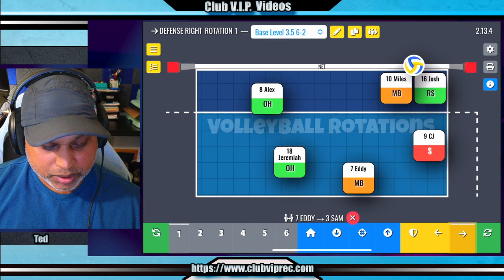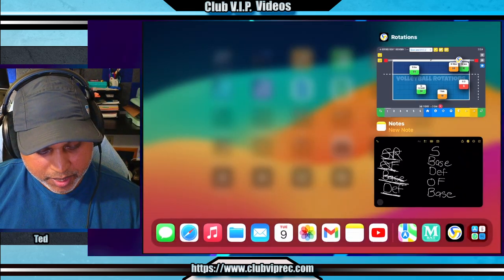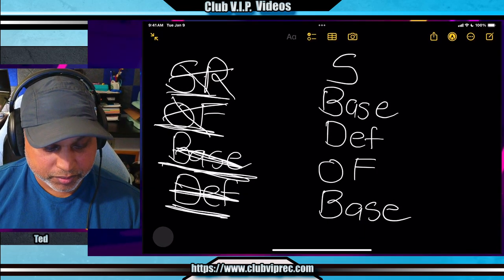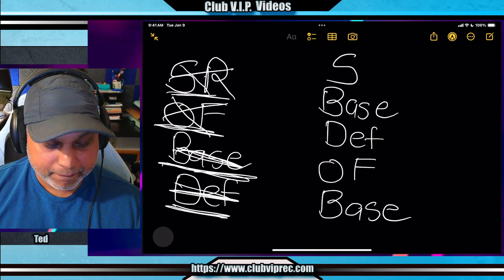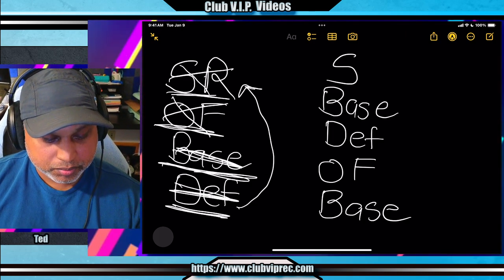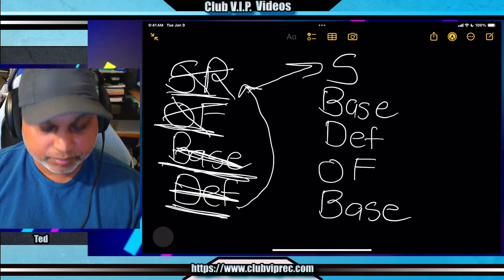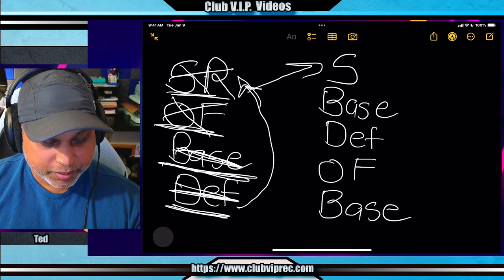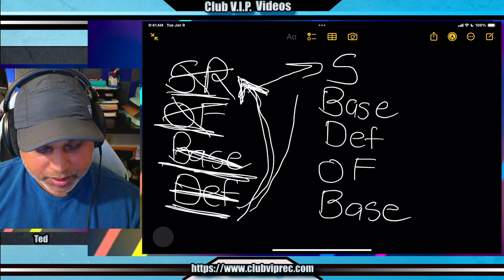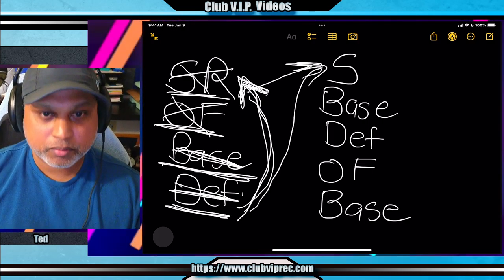Look at your position and see where you would normally go. So that's the cycle for when we're receiving: we covered defense, which completes the serve-receive cycle. After defense, if we win the rally, we go to service. If we lose the rally, we go back to serve-receive and follow the cycle one more time.